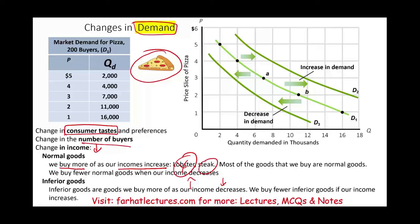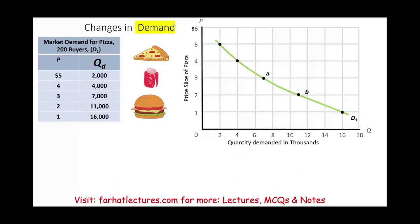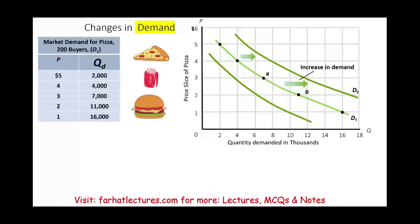So as income goes up in a nation, in an economy, they will consume more of normal goods — there will be a shift in the demand curve. This is the shift in the curve itself. Because price shifts you along the curve, whereas changes in income shift the whole curve right or left. Let's look at other reasons that could shift the curve to the right or to the left.